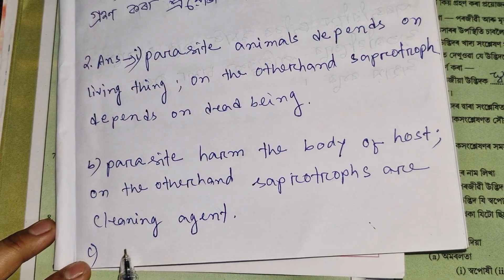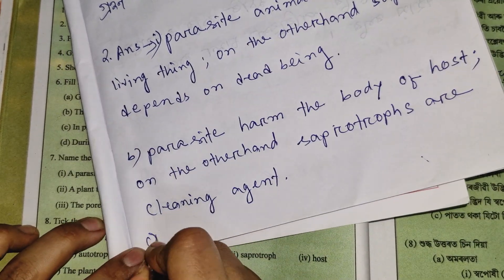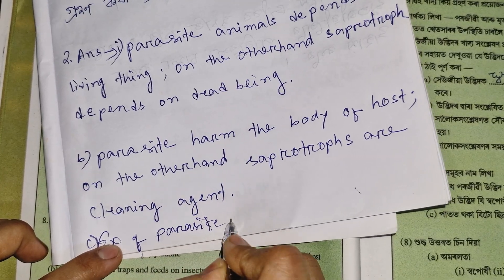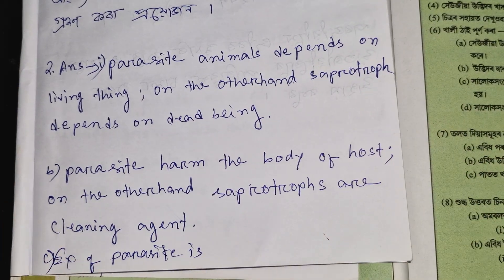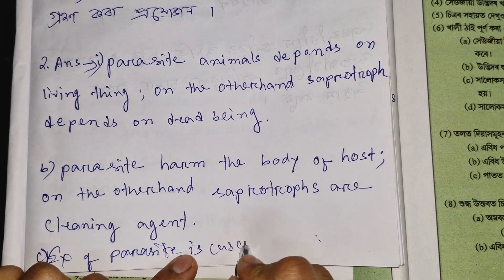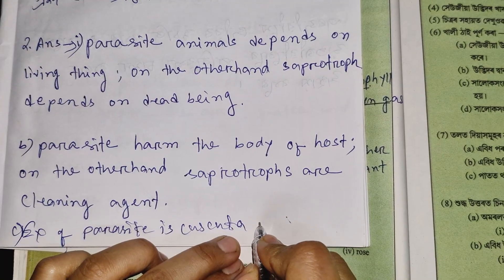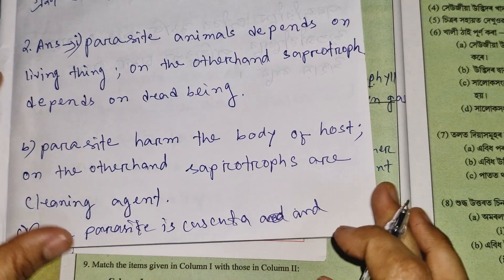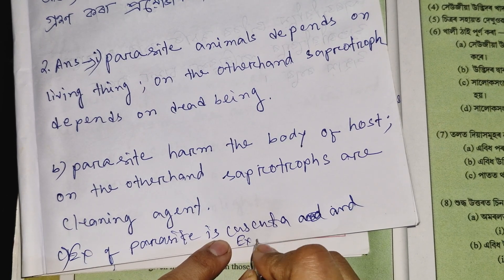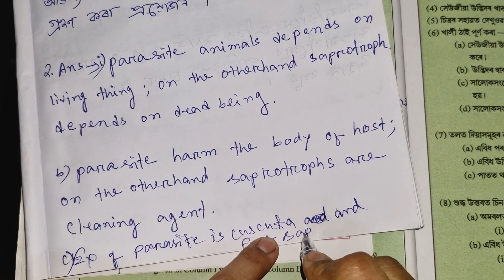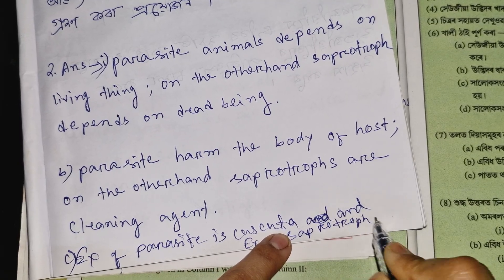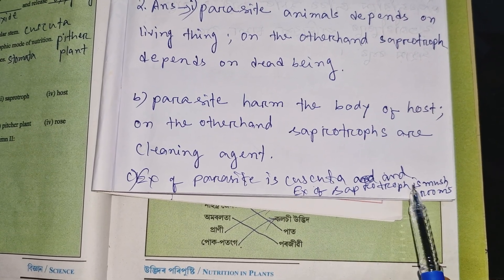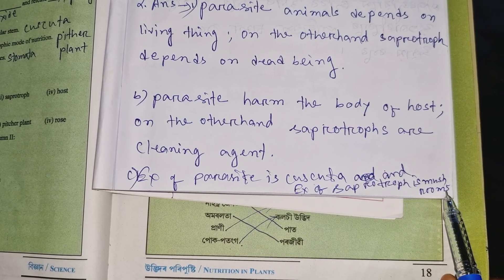An example of a parasite is Cuscuta. An example of a saprophyte, on the other hand, is mushroom — spelled M-U-S-H-R-O-O-M. Mushrooms are a common example of saprophytes.